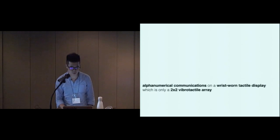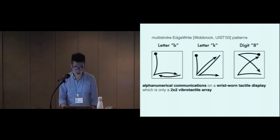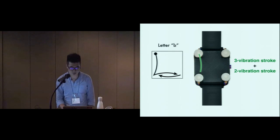which is only a 2x2 vibrotactile array. On such a 2x2 array, we displayed letters and digits using multi-stroke edge-write patterns, which consists of only nine segments, for example, letter B, letter K, and digit A. This is a short animation that demonstrates how edge-write actually works. Take letter B as an example. The corner points vibrate in a certain sequence so that users can interpret the character.